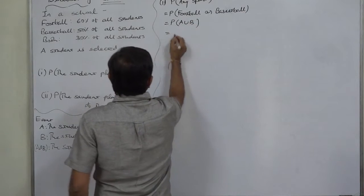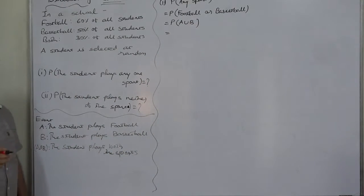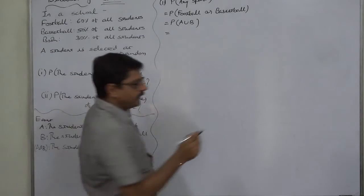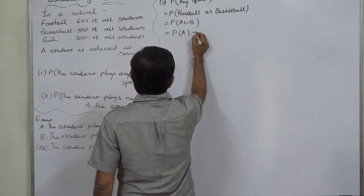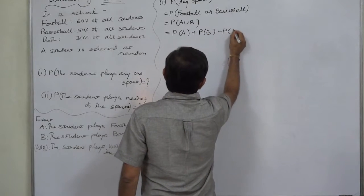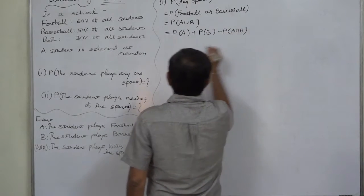Now we know that when intersection is possible, we should use the general law of addition of probabilities, that is P(A∪B) = P(A) + P(B) - P(A∩B).